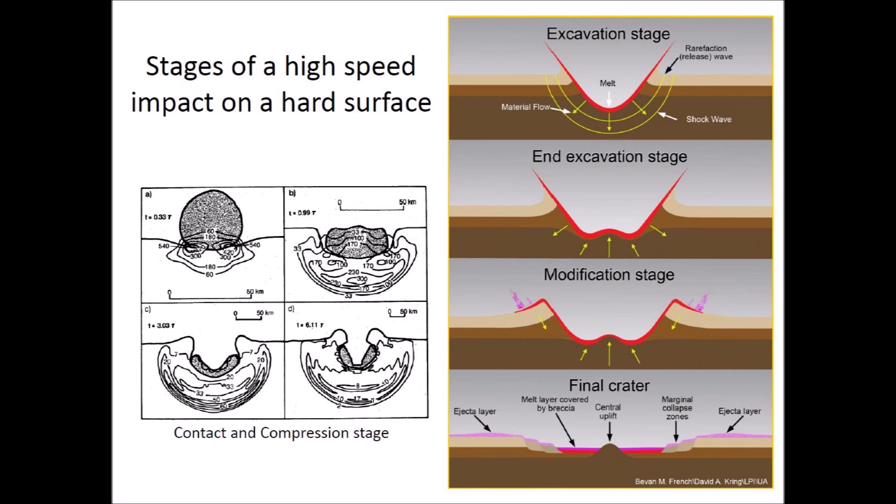A high-speed impact on a hard surface goes through several stages. During the contact and compression stage, the projectile contacts the target surface. The swiftly moving projectile pushes target material, compressing it and accelerating it to a large fraction of the impact velocity. Most of the projectile's kinetic energy is transferred to the target, creating a hemispherical shock wave that starts the excavation stage.